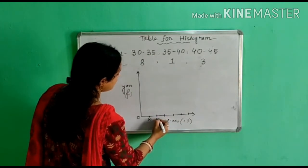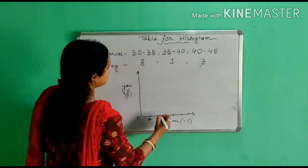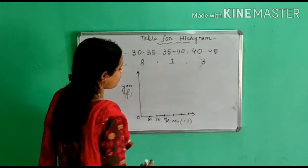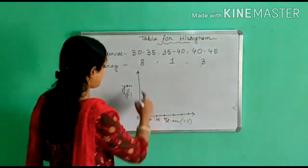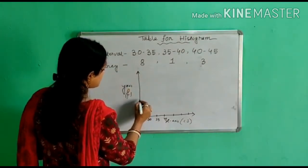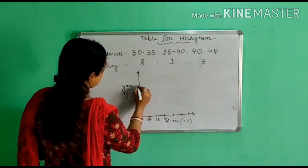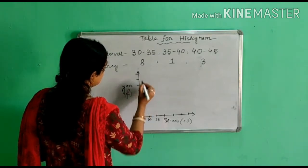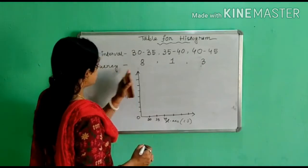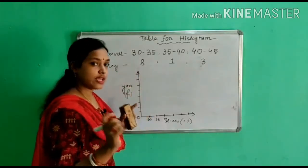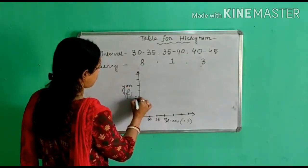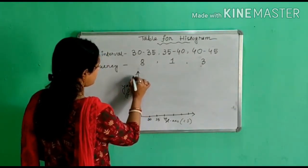Then 35, then 40. In this way you have to arrange all the class interval. Now from frequency again you set a scale which was one centimeter gap. Now the highest frequency is our 8. So 1, 2, 3, 4, 5, 6, 7, 8.